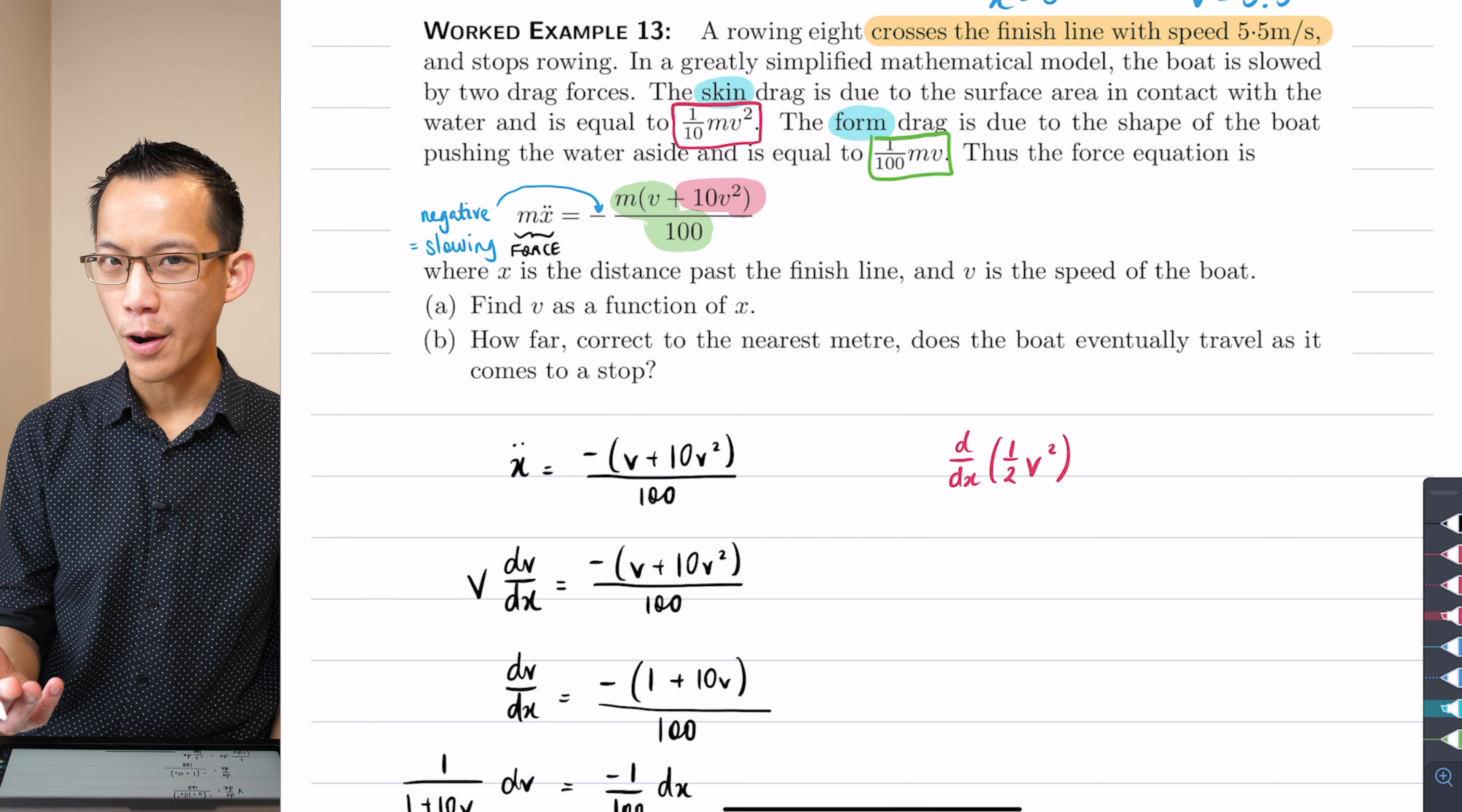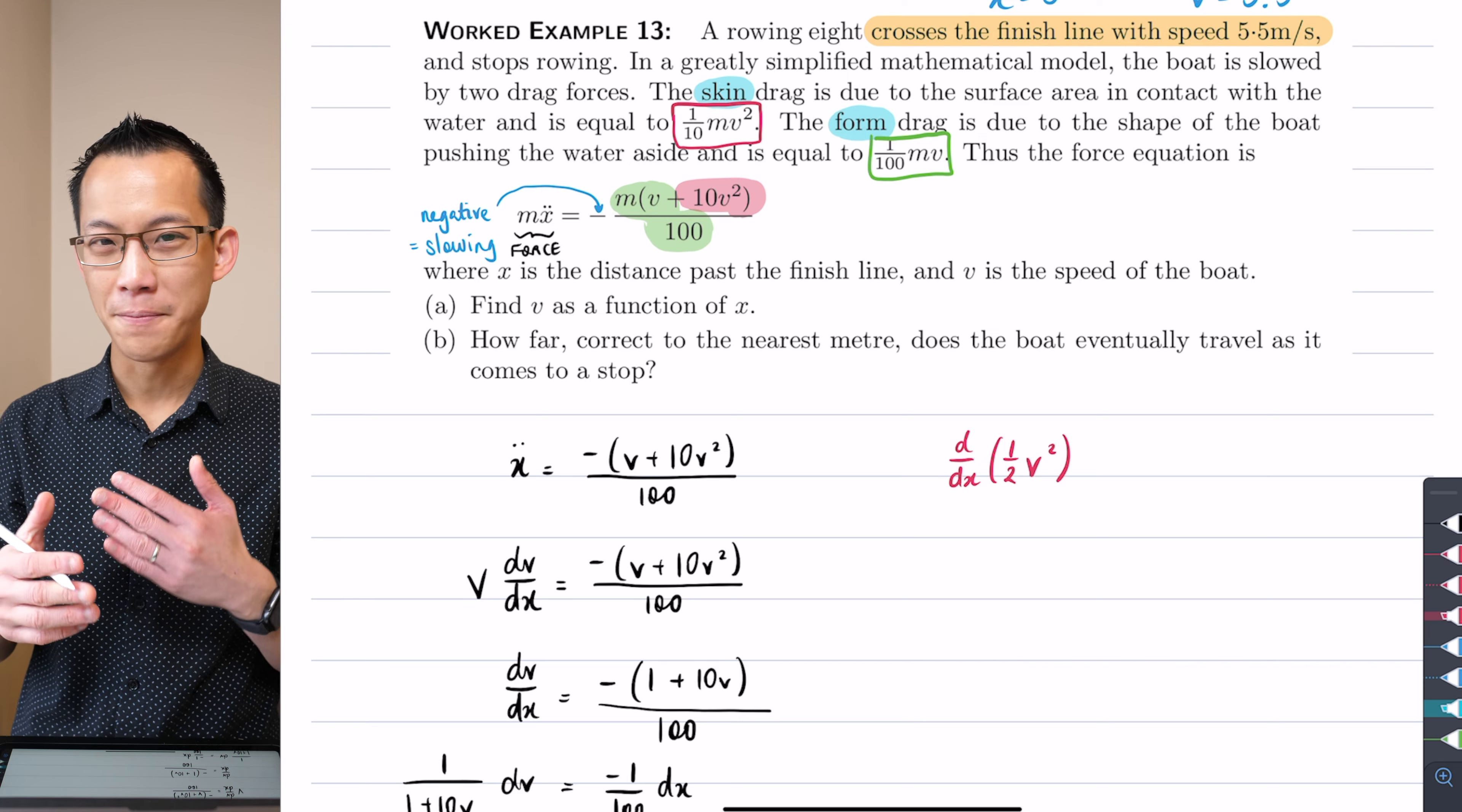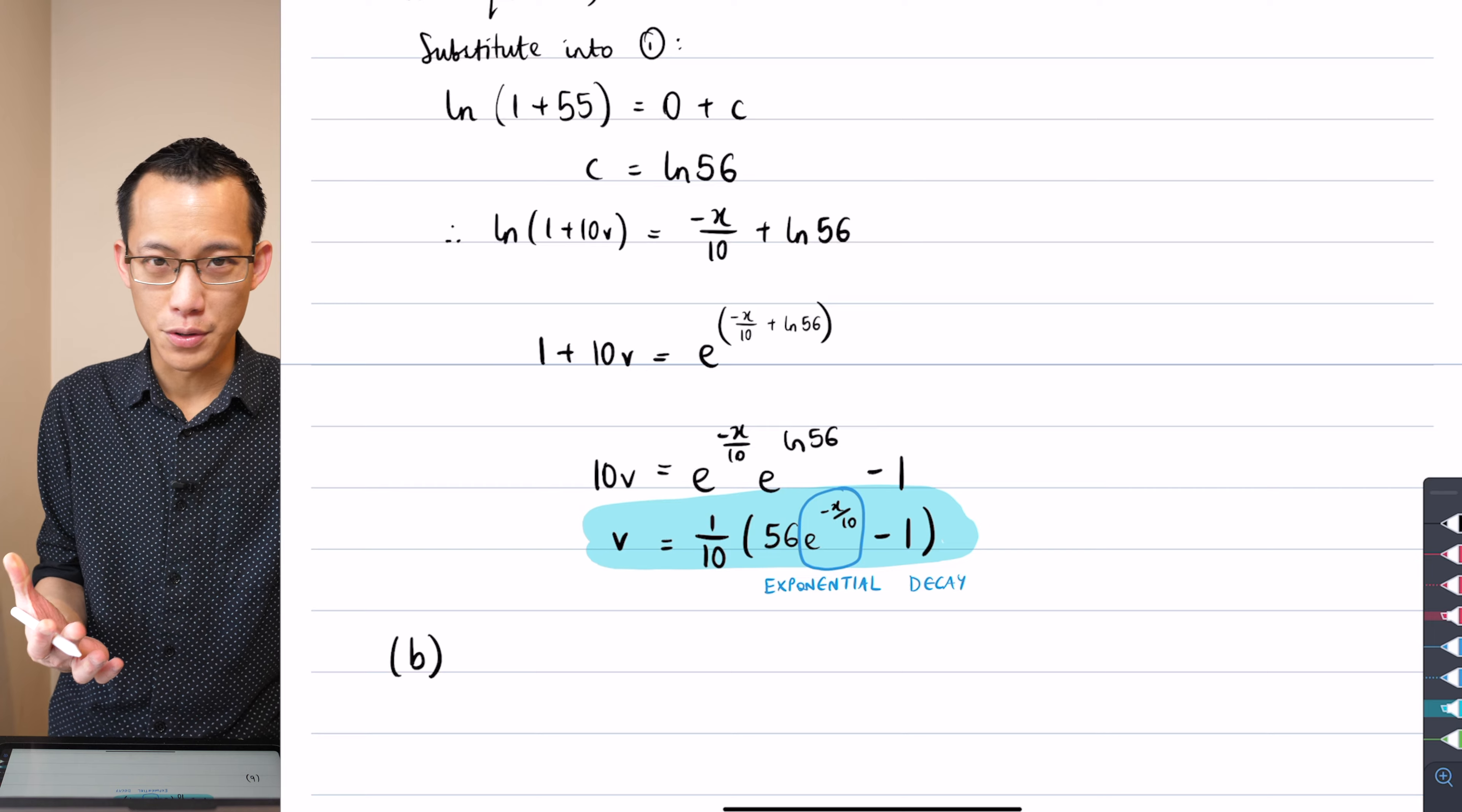And the way that I will know what x I'm after is when the boat eventually comes to a stop. That's a velocity of zero. Now we know velocity never actually equals zero, but I have a calculus trick in my pocket that helps me work out as things approach something, even if they never quite get there. And that is, of course, limits, right? So I'm going to take the limit as v approaches zero.